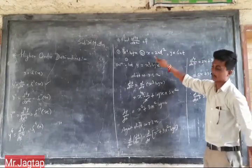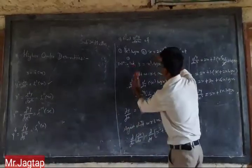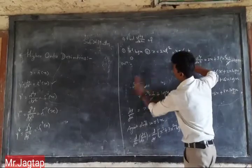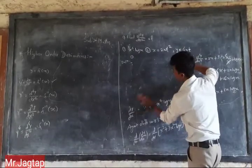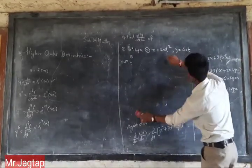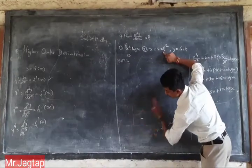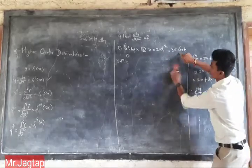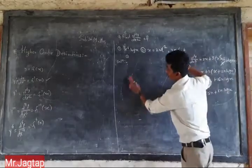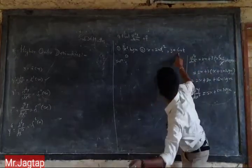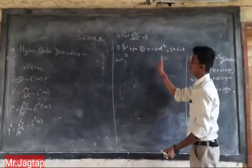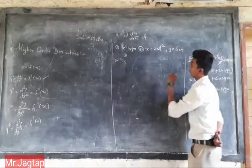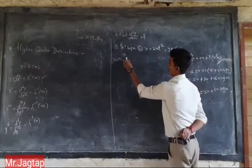Now we take the second function. The second function is given as a parametric type, where x equals 2t-squared and y equals 4at.